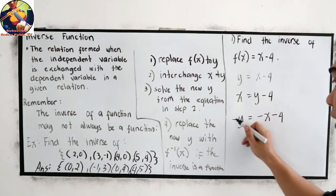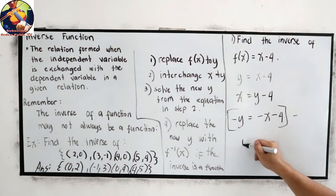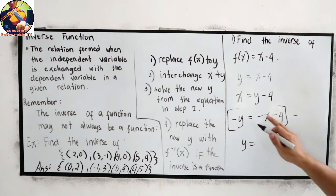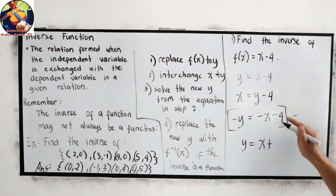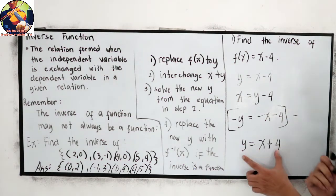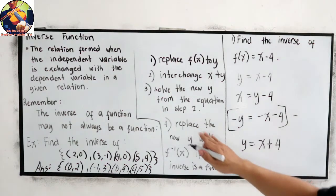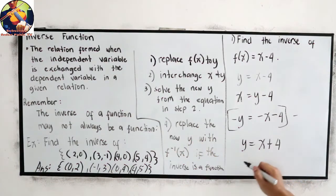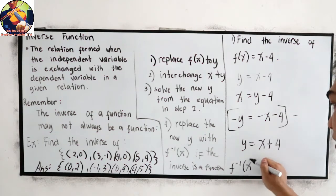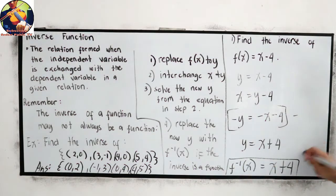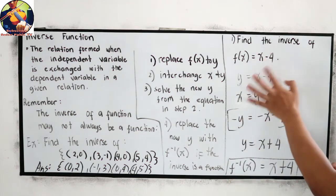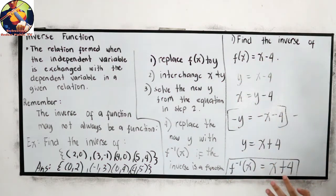To solve y, let us eliminate the negative. So multiply the equation by negative. So this will become y, because negative times negative is positive. Equals negative times negative, this will become positive x plus 4. We know that this is a function, so replace the new y with inverse of x. f inverse of x = x + 4. This is now our final answer. The inverse of x - 4 is x + 4.